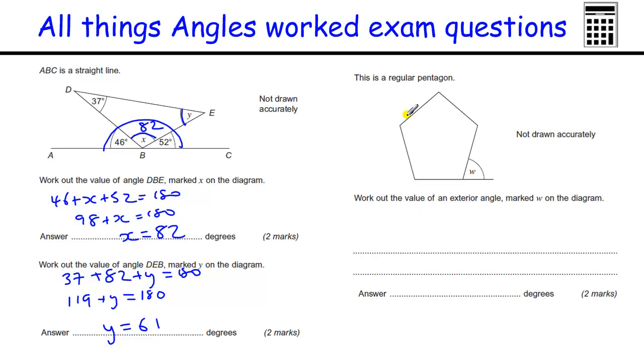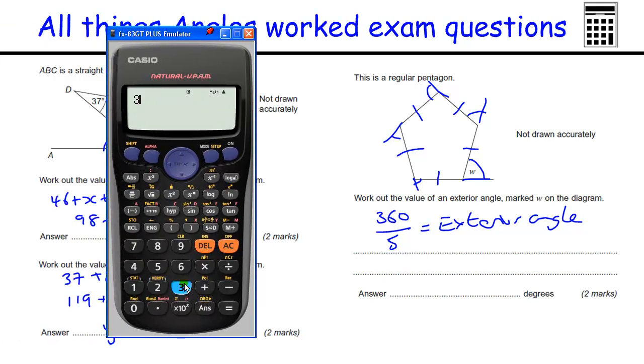Another regular polygon question. This is a regular pentagon. It doesn't look regular because it's not drawn accurately. But that means all these sides are the same, and all the angles on the outside are the same, and all the angles on the inside are the same because it's regular. So we've got to work out the value of the exterior angle marked on the diagram. So as I said before, the exterior angles you can work out because 360 divided by the number of sides, in this case is 5, equals the exterior angle. So 360 divided by 5, using the calculator. I think it's 72, yeah, 72.